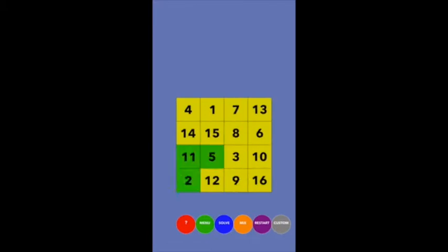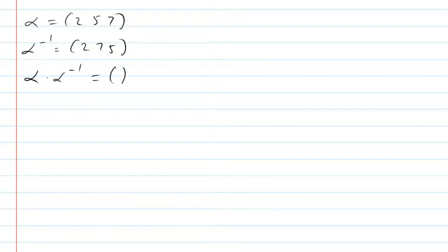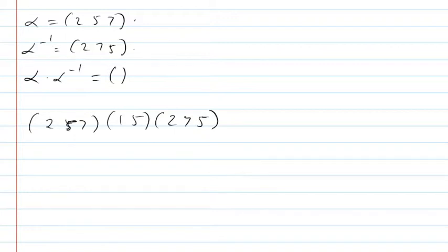By the end of this lecture you will have a technique for solving both puzzles, and it involves something in group theory known as conjugation. The way conjugation works: if you have a permutation like (2 5 7), its inverse is (2 7 5). If you compose it with its own inverse, it undoes itself back to the identity. But if instead of the inverse you put in something different — call it beta — between alpha and alpha-inverse, you get something interesting.